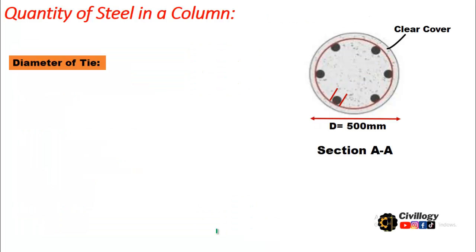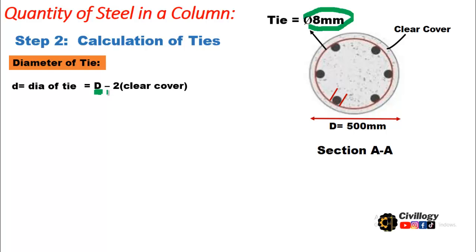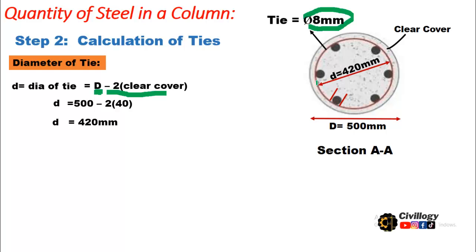Now coming to the second step — calculation of ties. The diameter of bar used for ties is 8 millimeters. The diameter of the tie equals the gross diameter of the column minus 2 times the clear cover, because the concrete cover is provided around the steel. So the tie diameter is 500 minus 2 times 40, which equals 420 millimeters, and the radius will be 210 millimeters.